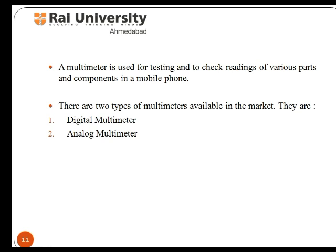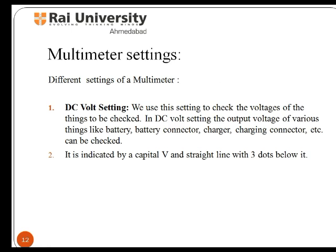A multimeter is a device used for testing and checking readings of various components in a mobile phone. There are two types of multimeter available in the market: the digital multimeter and the analog multimeter. Analog multimeters use a microammeter whose pointer moves over a scale calibrated for all the different measurements that can be made. Digital multimeters display the measured value in numerals and may also display a bar of length proportional to the quantity being measured. Different settings of a multimeter are DC volt setting, resistance setting, and continuity.